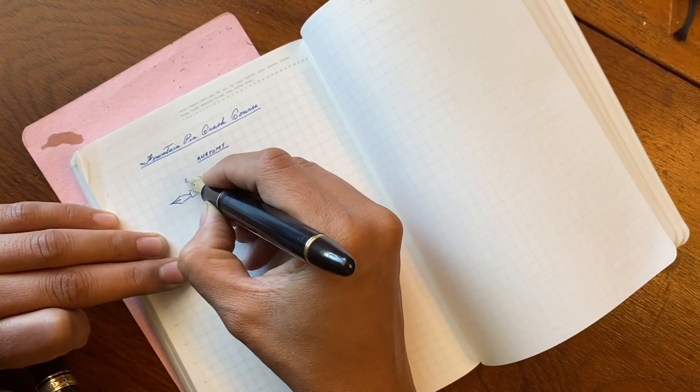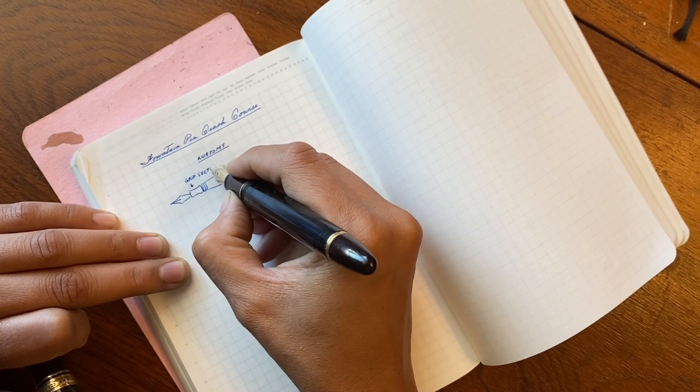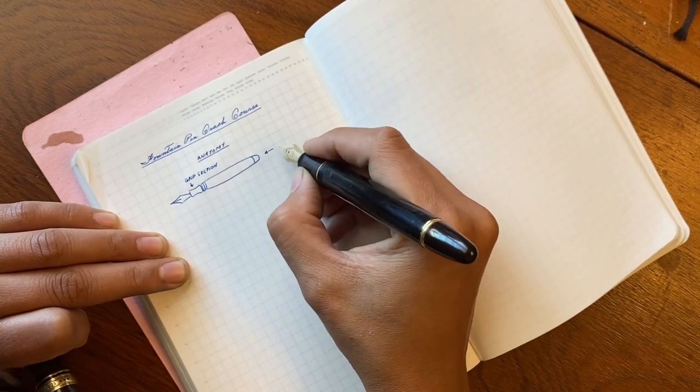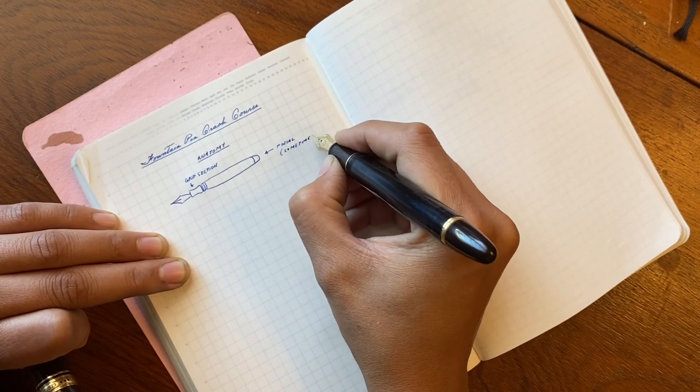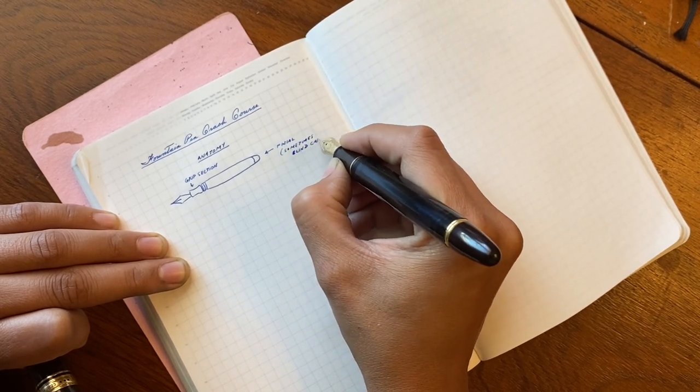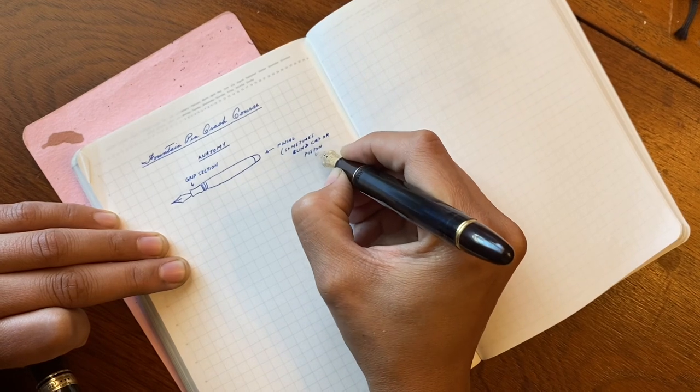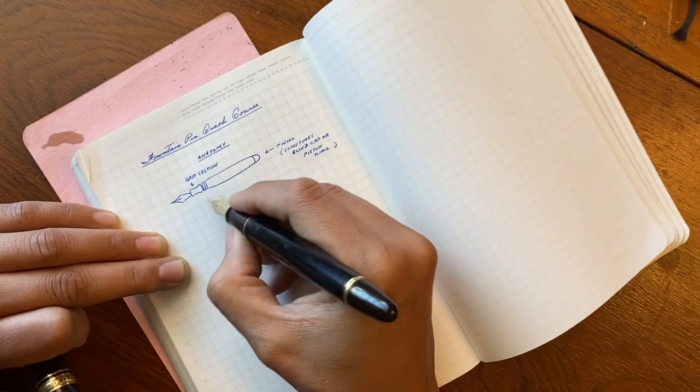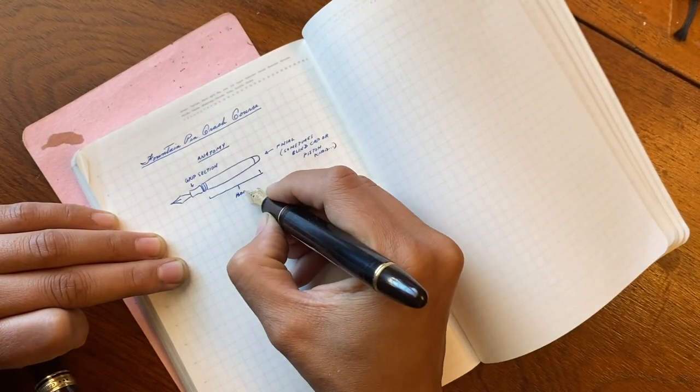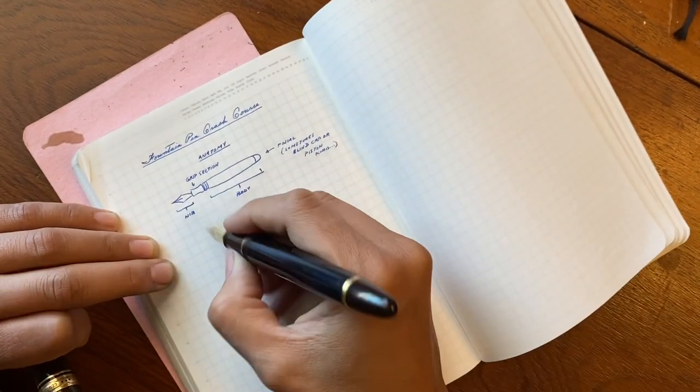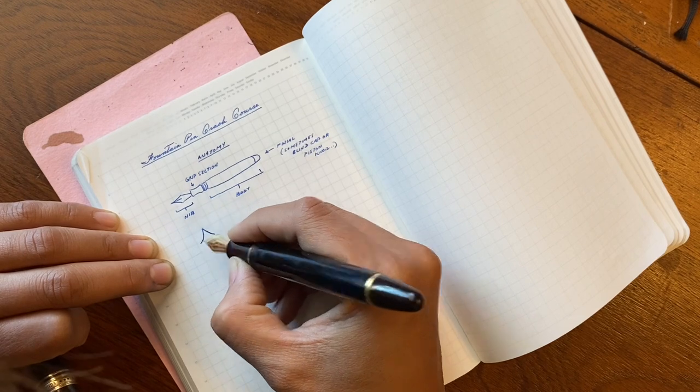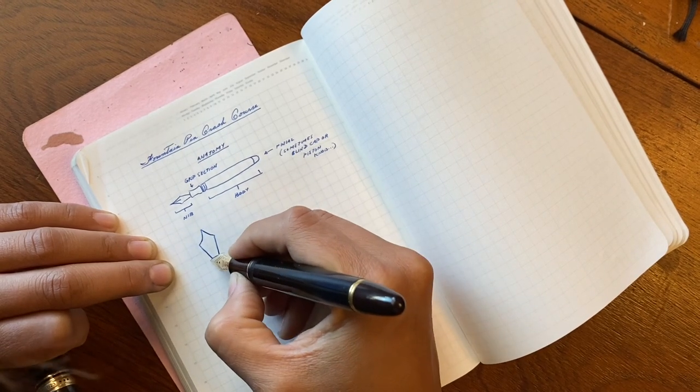So first we'll get started with the anatomy of a fountain pen. We have what is called the grip section, this is where you grip the pen. At the end we have the finial, which is also sometimes called a blind cap or a piston knob depending on the type of filler your fountain pen is. You have the body of the pen and of course the nib.